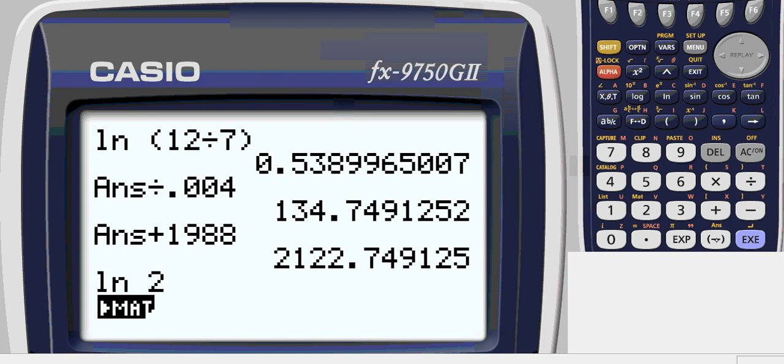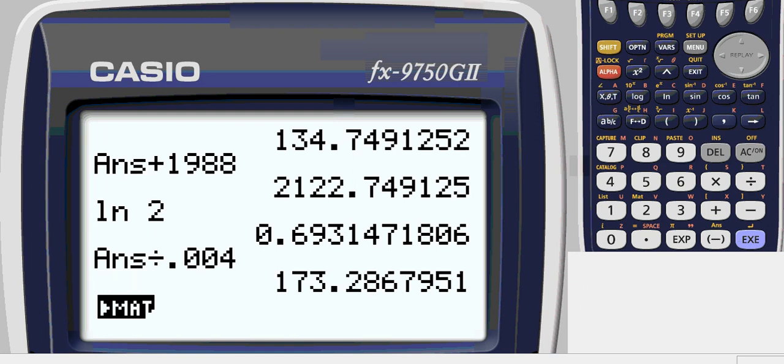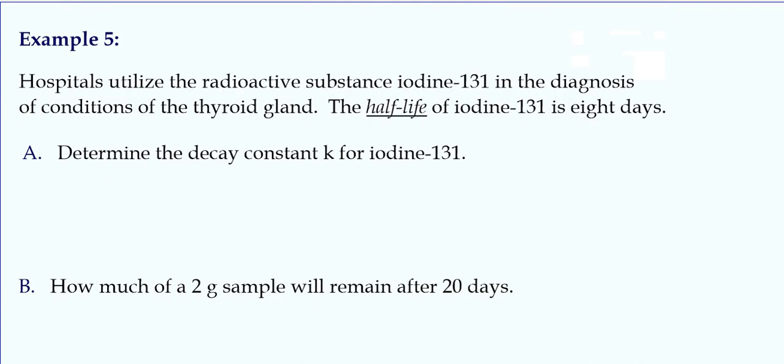So natural log of 2 divided by 0.004. 173.29 years. Now notice this one says how long. So that's the appropriate answer, 173 years. If it says when, then you actually put it back in context of the year.